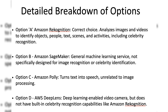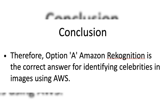Option D, AWS DeepLens, is a deep learning-enabled video camera that can run deep learning models locally on the device for applications like object detection. However, it does not have built-in celebrity recognition capabilities like Amazon Rekognition. Therefore, Option A, Amazon Rekognition, is the correct answer for identifying celebrities in images using Amazon Web Services.